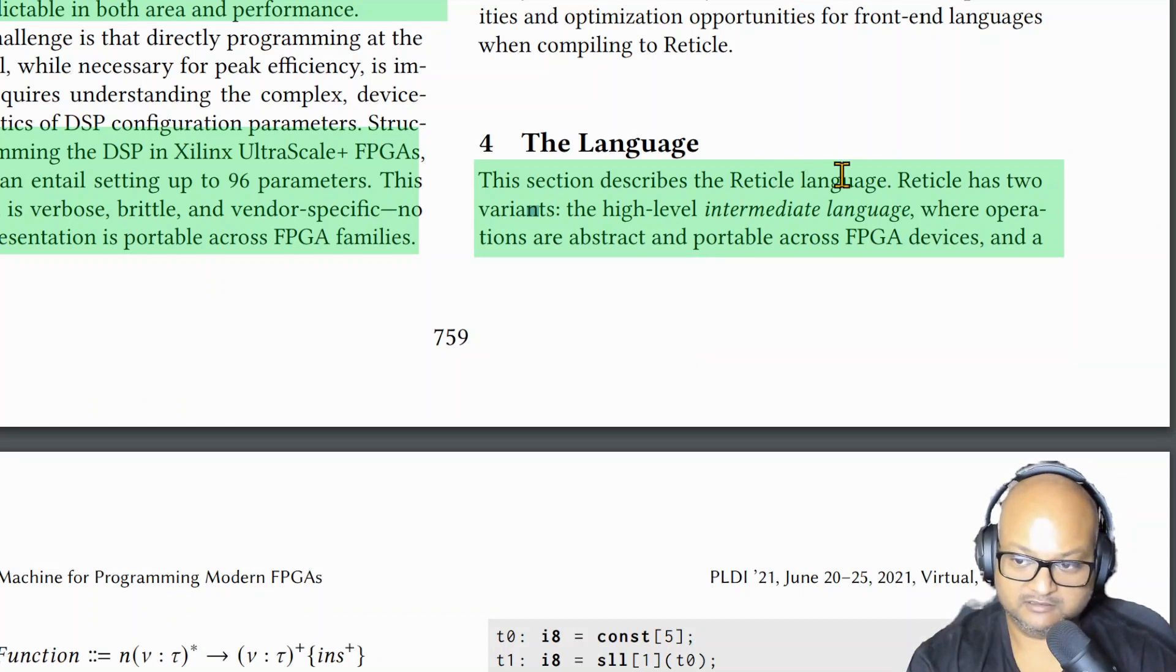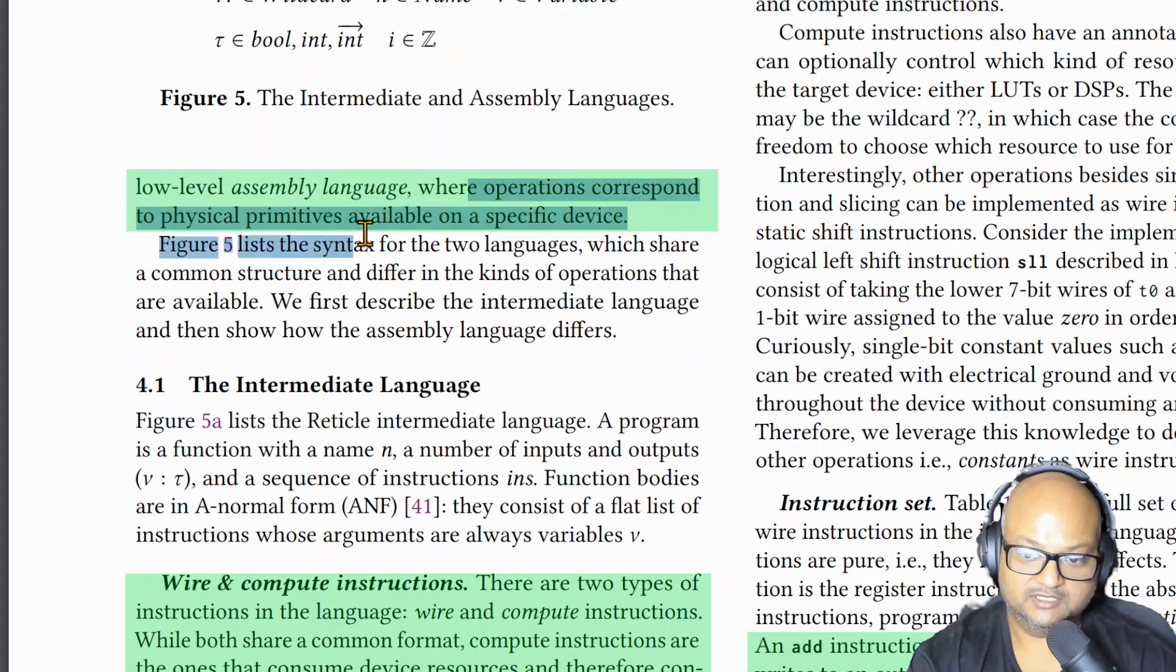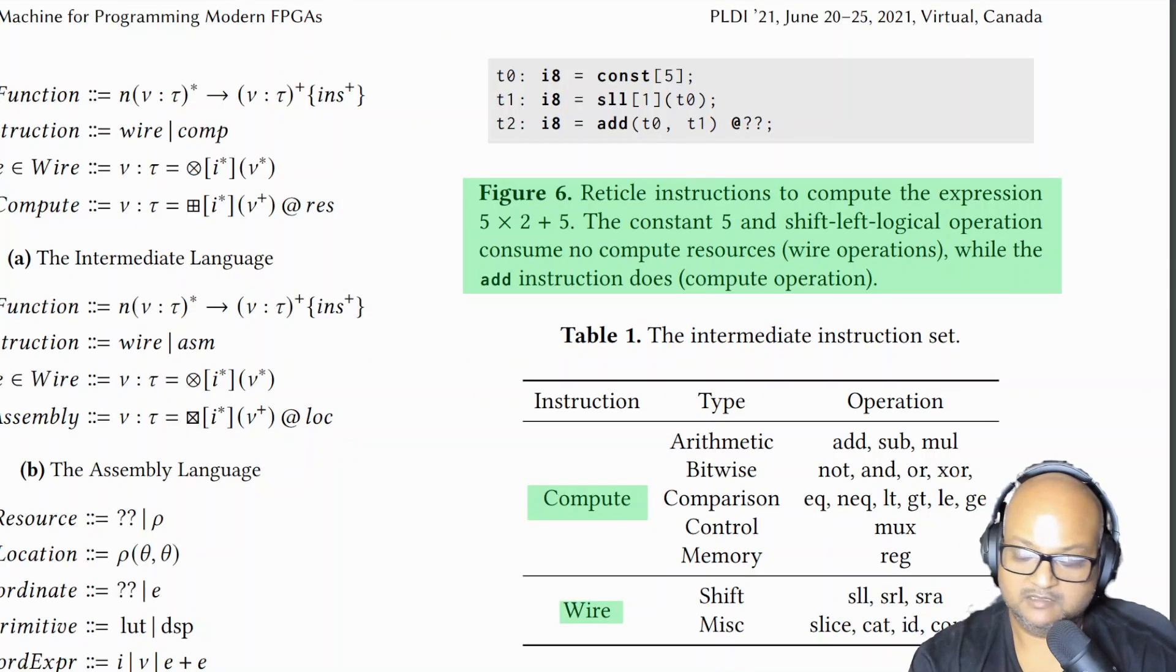Let's take a closer look at the Reticle language. It consists of two languages really: there's a higher level intermediate language which is not specific to hardware, it's abstracted from hardware and is portable across various FPGAs, and then that gets compiled down to a lower level assembly language. And that's where the operations map to the physical primitives available on a specific FPGA.